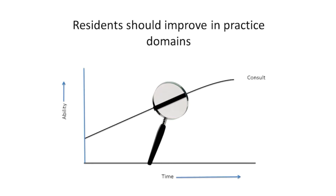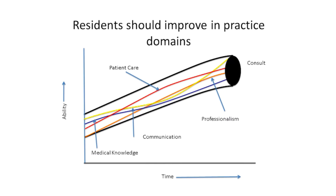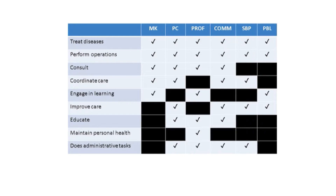Each practice domain is made up of several competencies. They took each domain and tried to identify what the milestones were for each competency in that domain. These are the nine practice domains: treat diseases, perform operations, consult, coordinate care, engage in learning, improve care, educate, maintain personal health, and do administrative tasks.